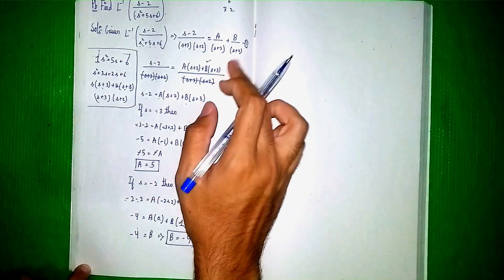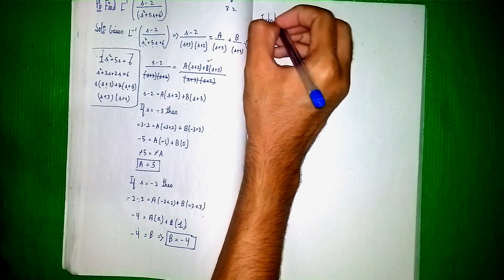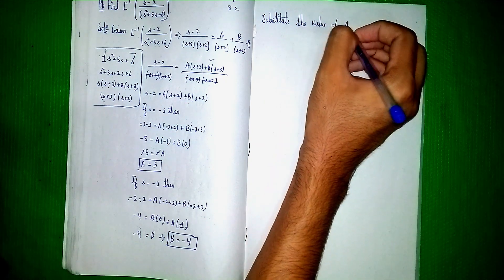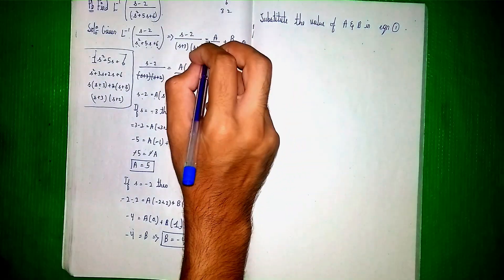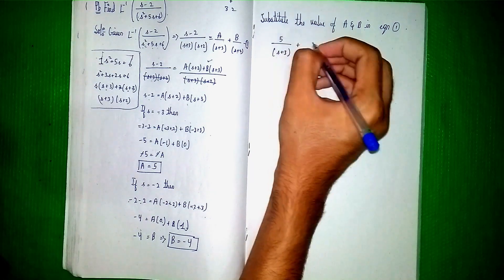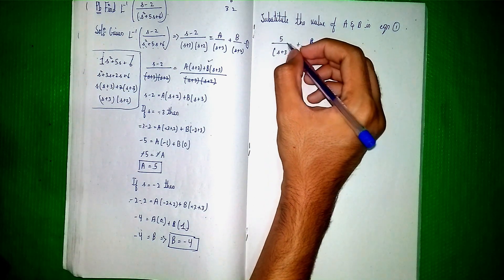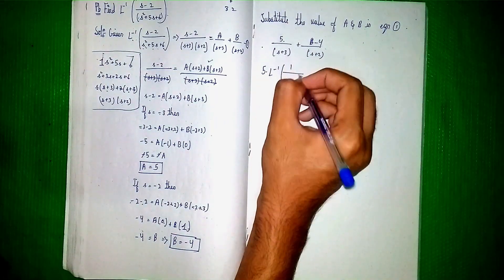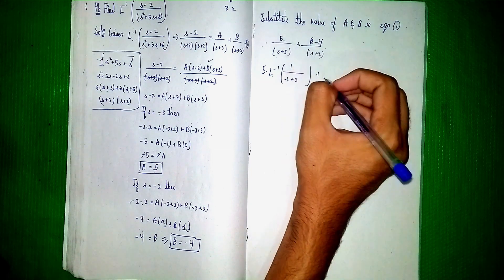Now substitute the values of A and B into equation 1. A is 5 and B is minus 4. So we get 5 by (s plus 3) plus (minus 4) by (s plus 2). Now we apply the Laplace inverse: 5 times Laplace inverse of 1 by (s plus 3), taking 5 outside, minus 4 times Laplace inverse of 1 by (s plus 2).